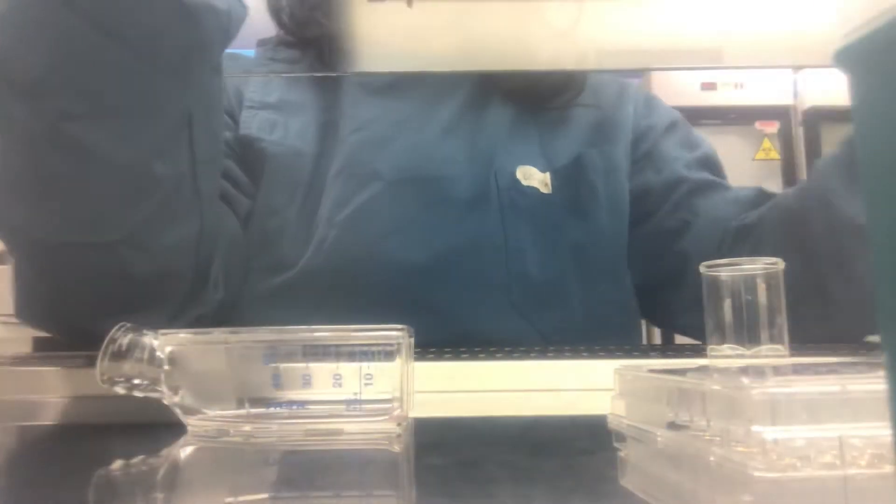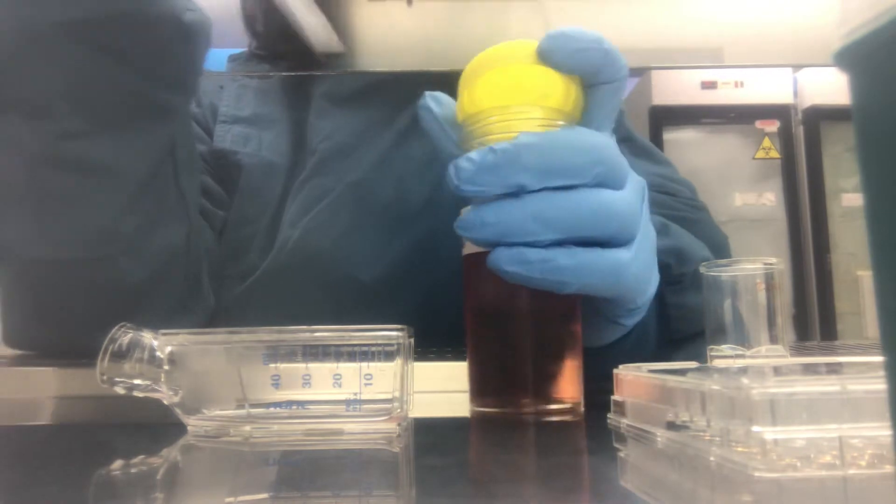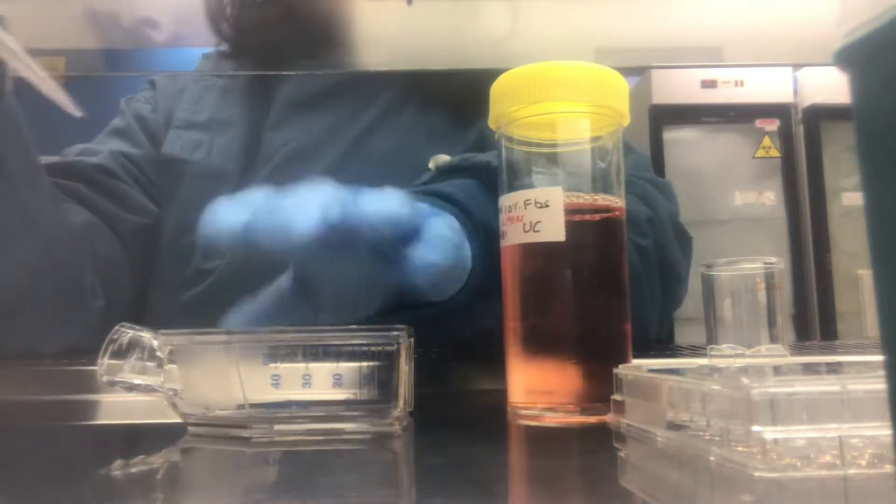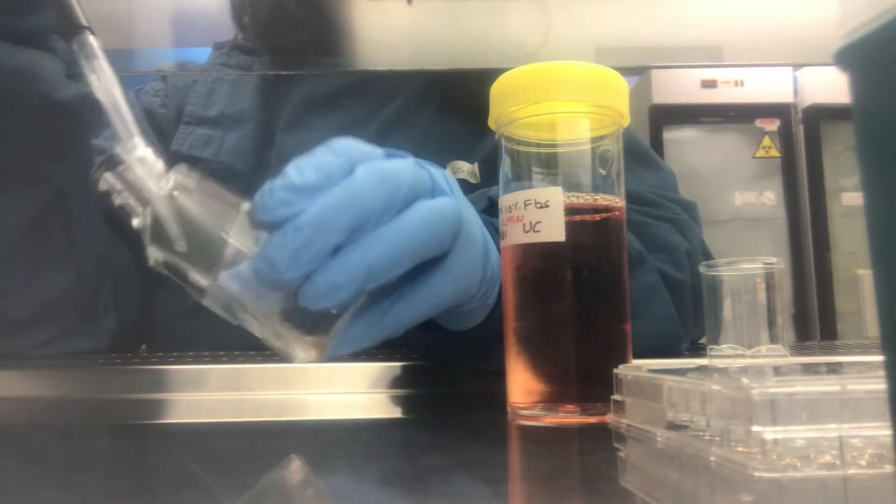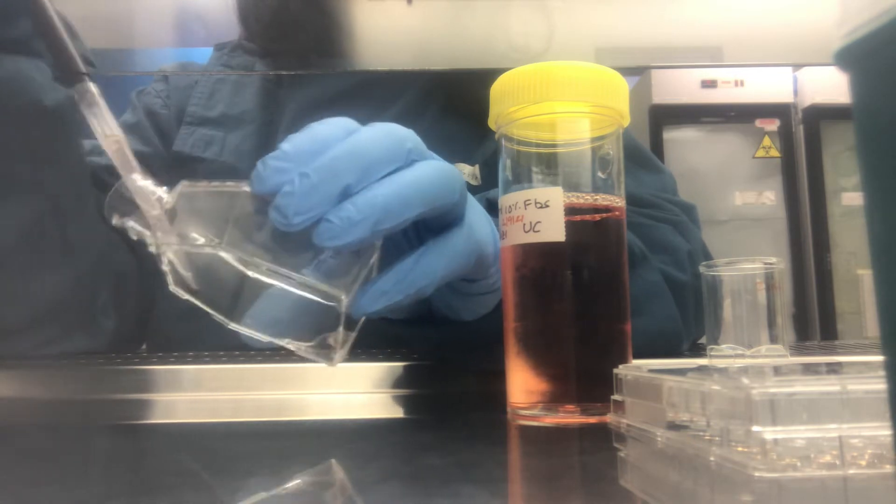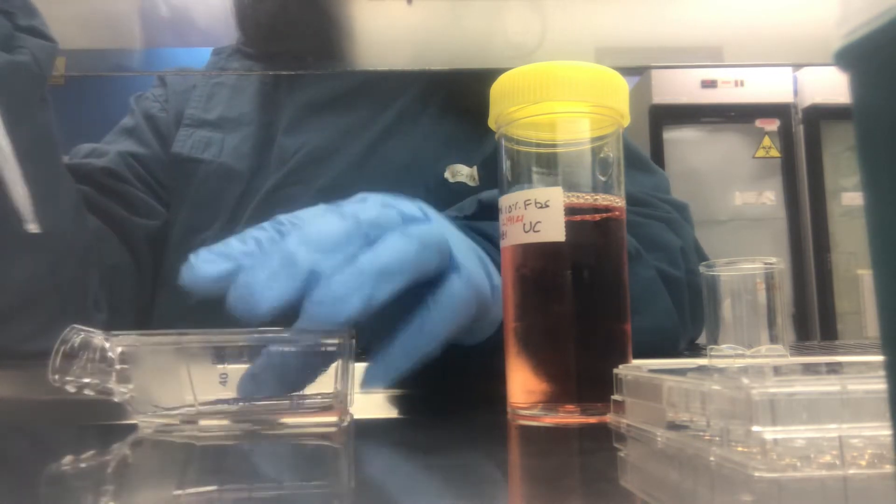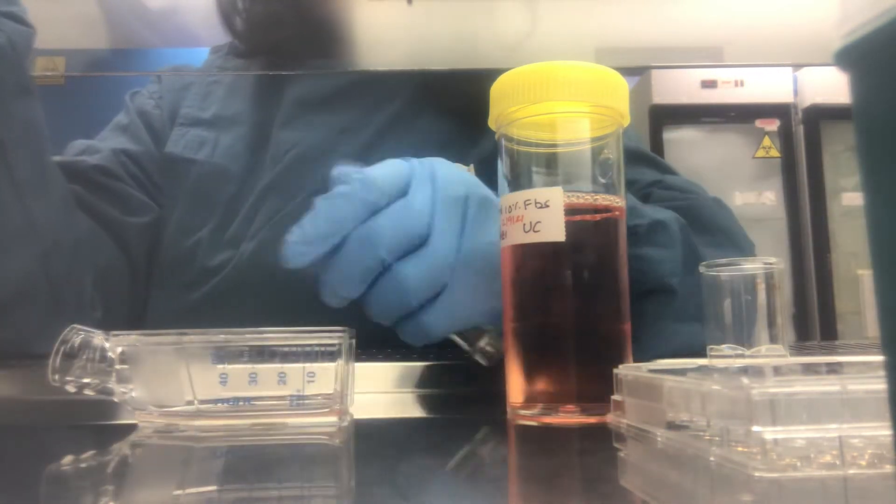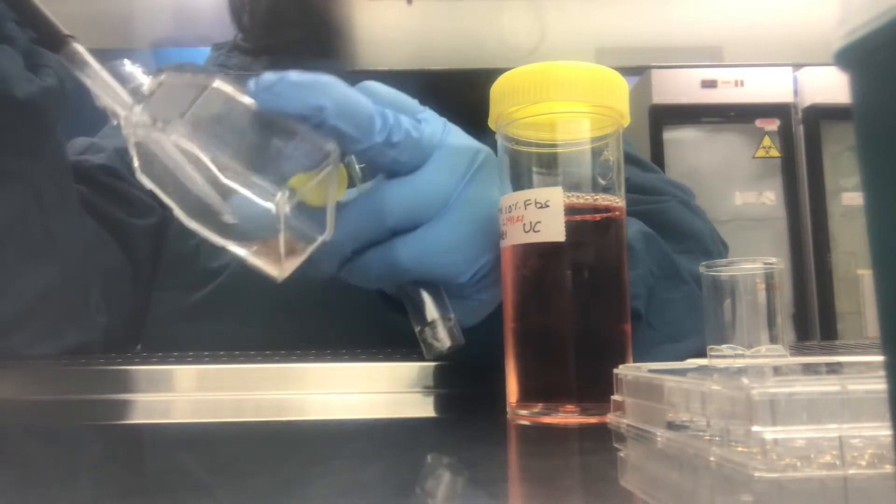Once you've confirmed that your cells got detached from the flask, add your media to neutralize the trypsin effect. Just rinse the surface area to detach all the cells out. Now I'm collecting these detached cells in another tube so that I can centrifuge it to pellet the cells.